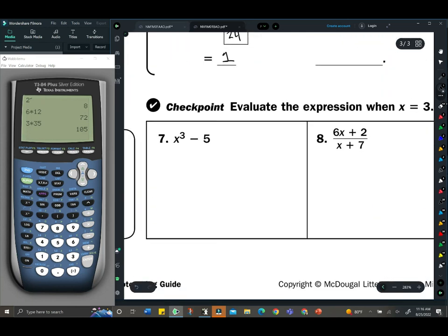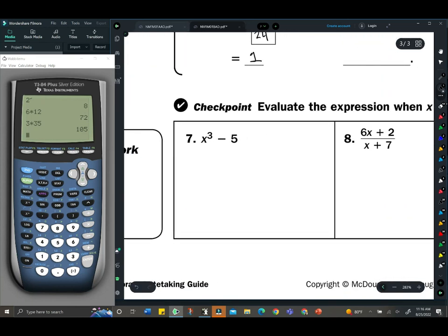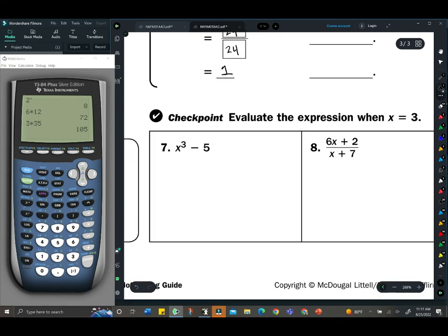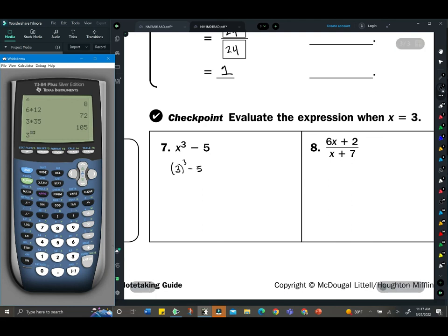These ones we're going to try out. x³ - 5, evaluate when x equals 3. So we have 3³ minus 5. 3³ is not 9, it's 27. 27 - 5 is 22, there's your answer.